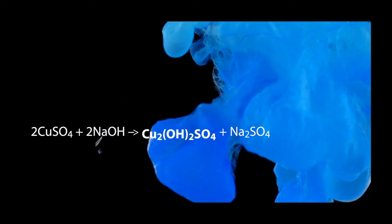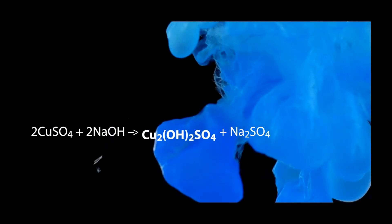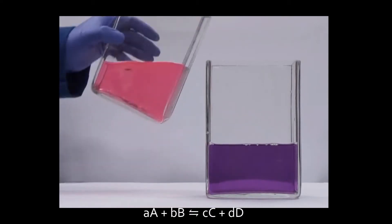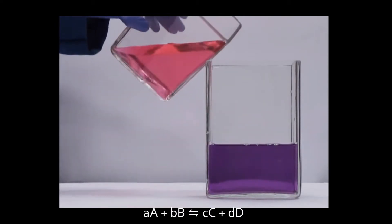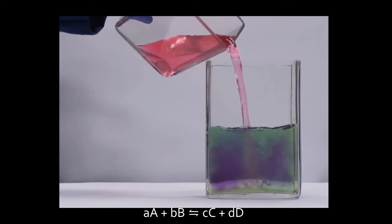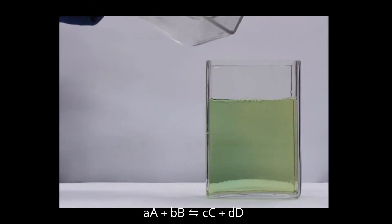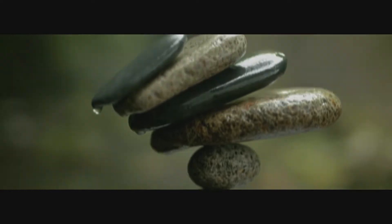When most people think of a chemical reaction, they usually think of something along these lines: simple reactants forming products, and that is the end of it. But in actuality, it usually looks like this, where the capital letters represent chemical species and the italicized lowercase letters indicate their coefficients. In other words, there is a balance to everything.